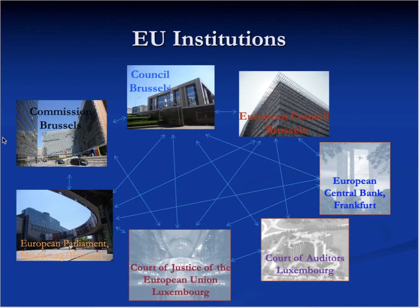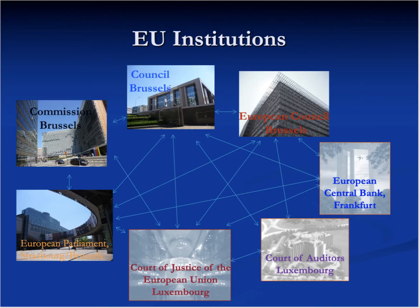Article 10 talks about a number of European Union institutions. Here is a slide with pictures of the main European institutions and where each of them is based — some are based in Brussels, but others are based in other cities. Article 10 specifies that the European Parliament is directly elected by the electorate in the member states. The Council consists of member states' ministers, and the European Council — which isn't the same as the Council — consists of heads of state and government, who are accountable to the voters or parliament of each individual member state.